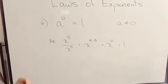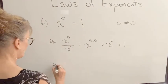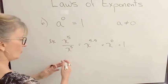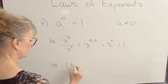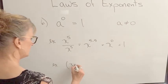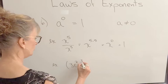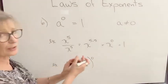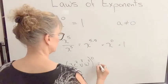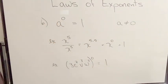And another example, I could have all sorts of things raised to the power of 0. Say I have 3t squared v cubed w to the 5th power. If I have that whole thing raised to the power of 0, it doesn't matter, it's equal to 1.